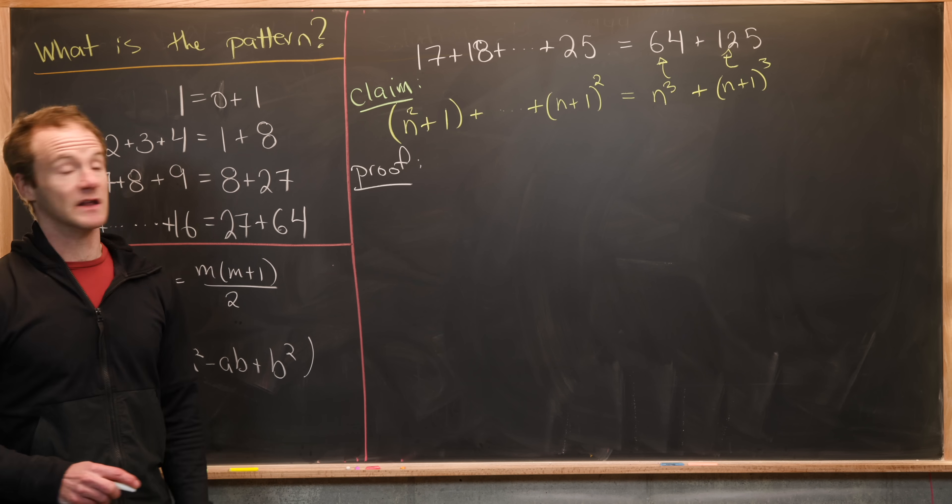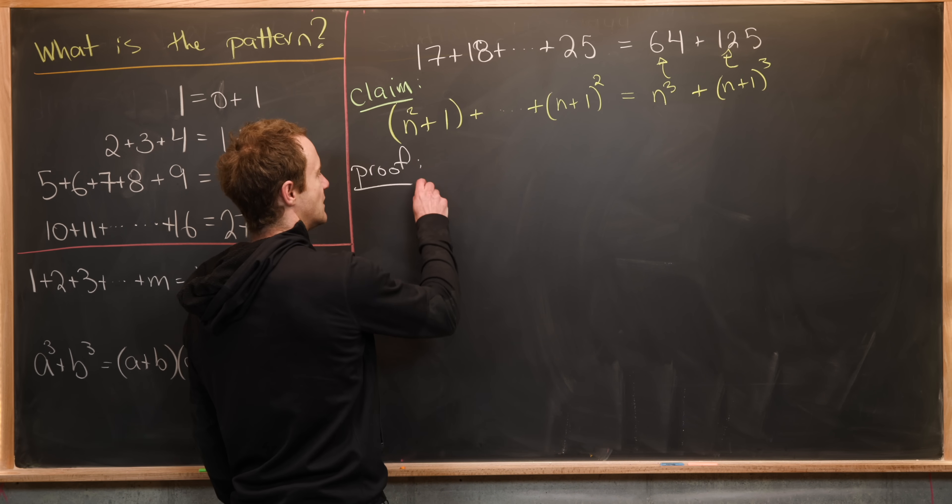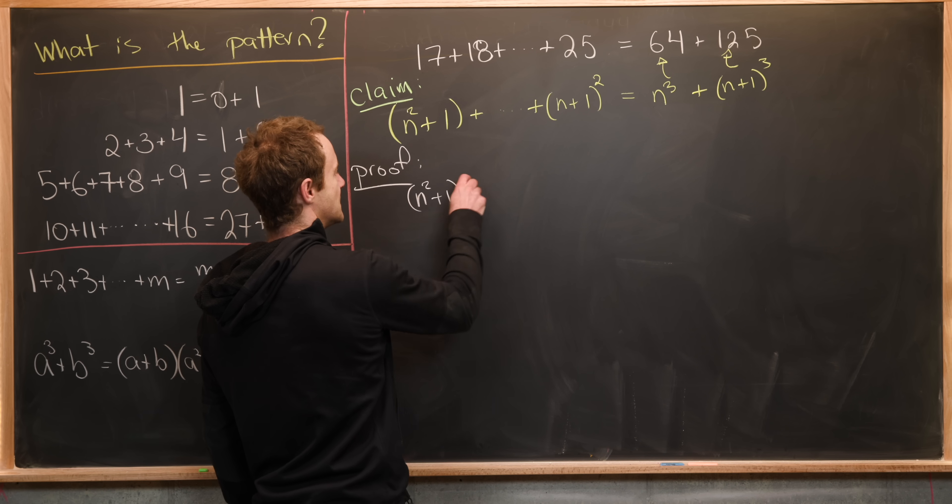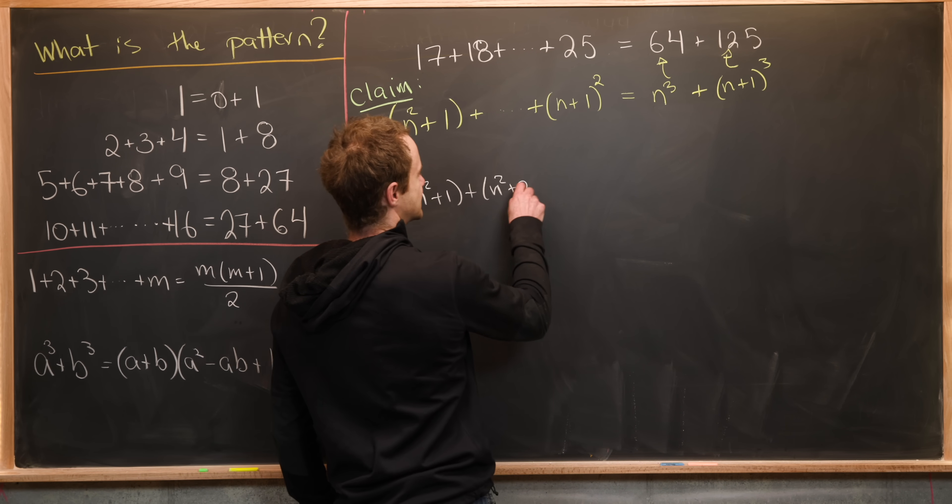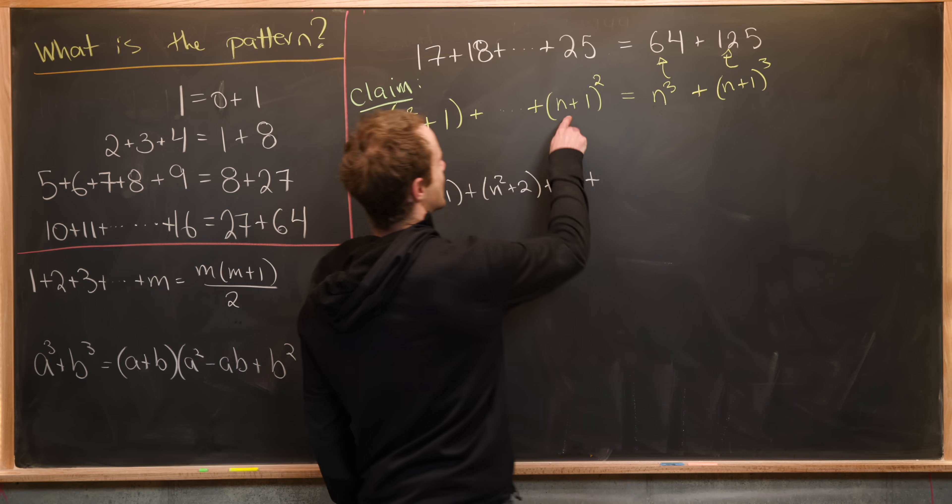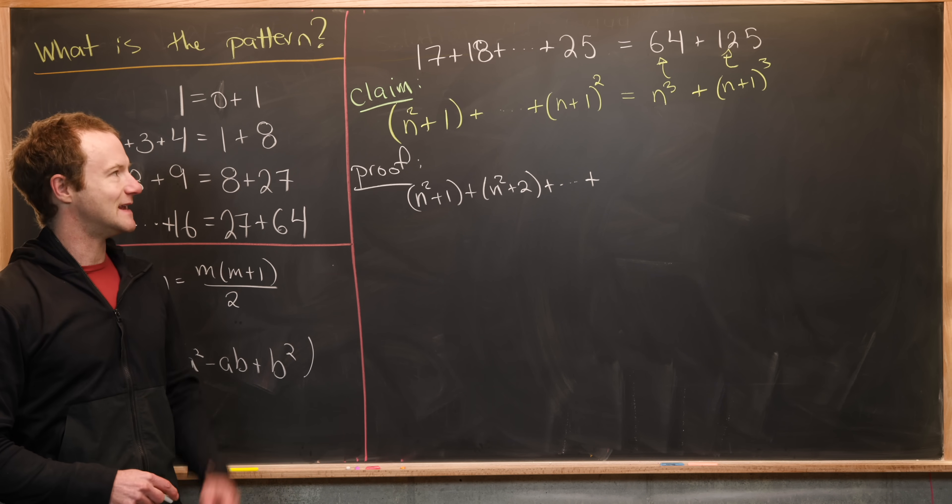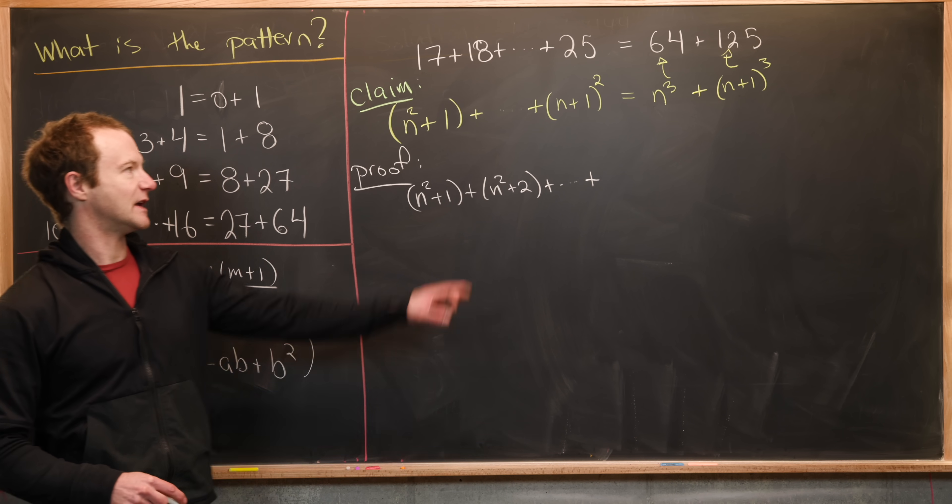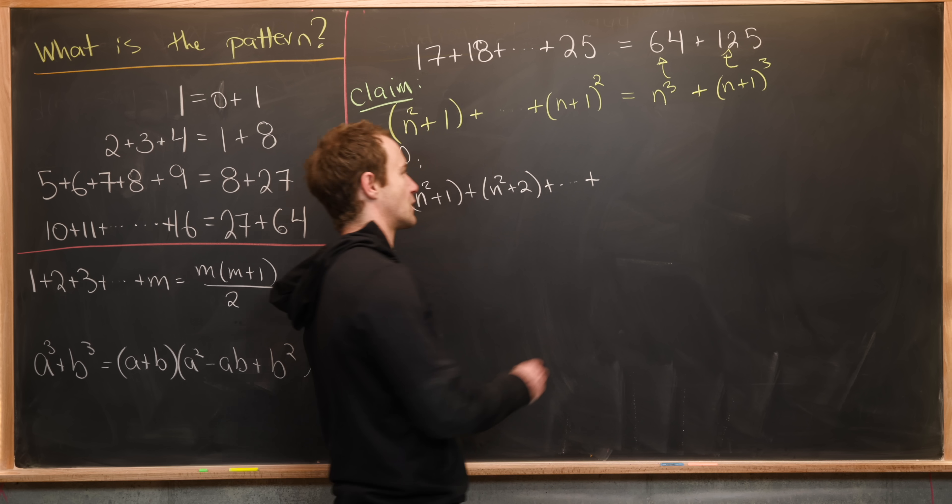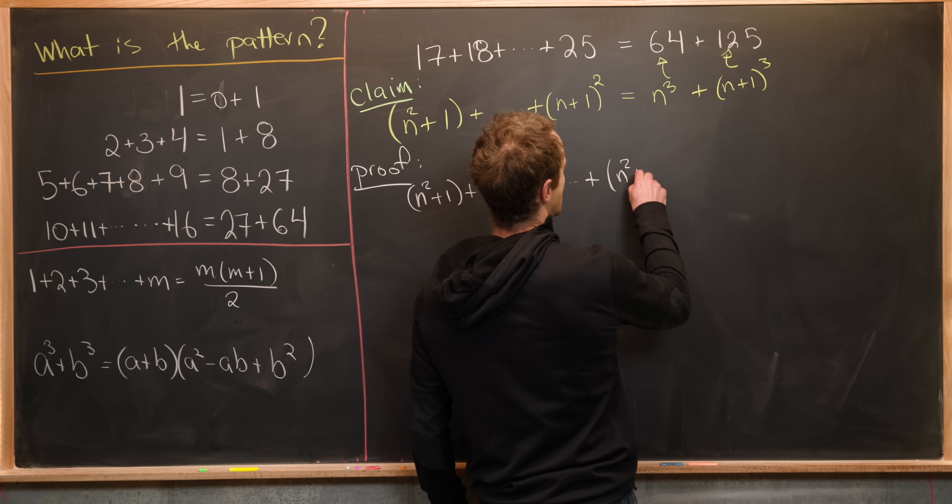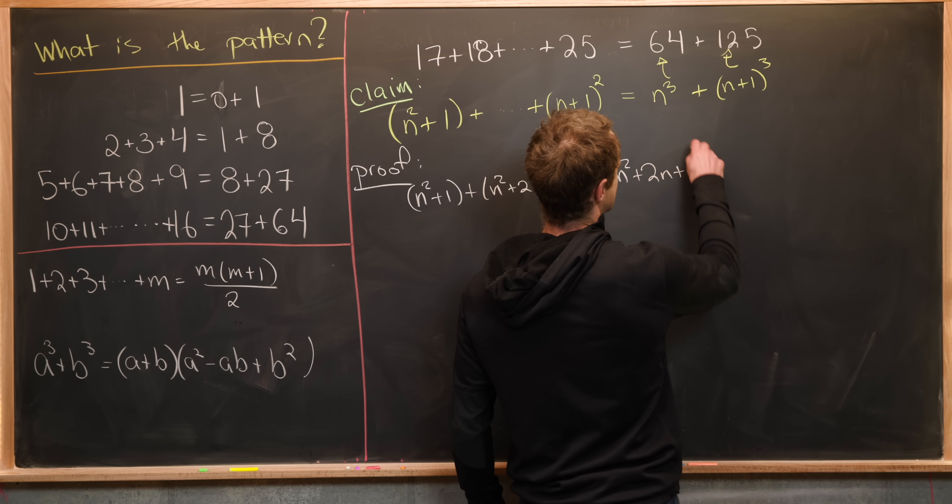So we'll start with the left hand side. So I'll just rewrite it. We got n squared plus one plus n squared plus two plus all the way up to n plus one quantity squared. But I'm going to name that something else. Well, it's not really renaming it. I'm going to multiply out that perfect square binomial to give me n squared plus two n plus one.